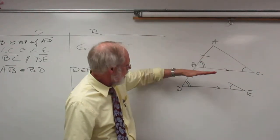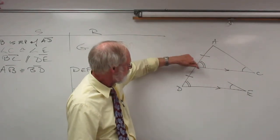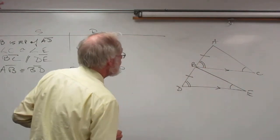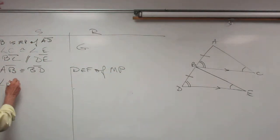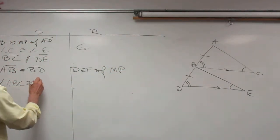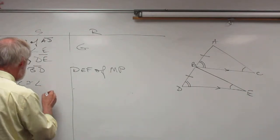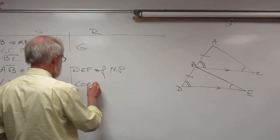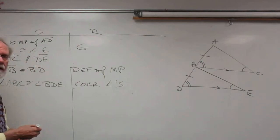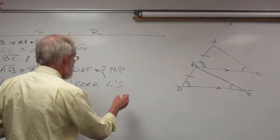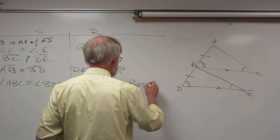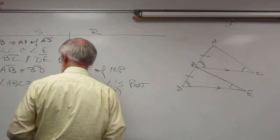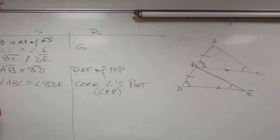Angle ABC is congruent to angle BDE. The reason is corresponding angles — two parallel lines give congruent corresponding angles. This is a postulate, which we call the Corresponding Angles Postulate (CAP).